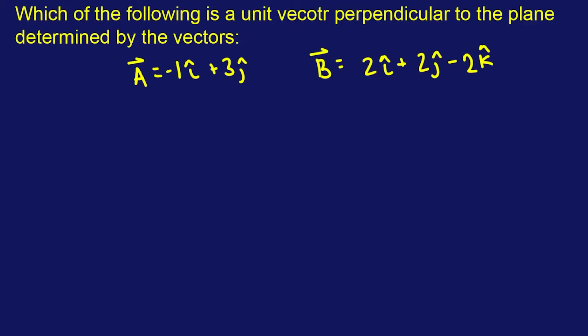Alright, I may have started off a little cocky. This one's probably pretty damn difficult. If you don't know the cross product — of course not. A cross B will always give you the normal vector, the span across A and B.